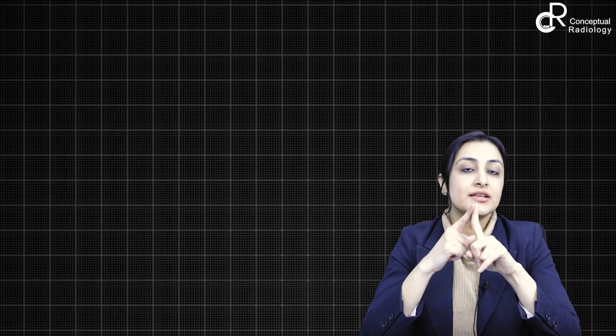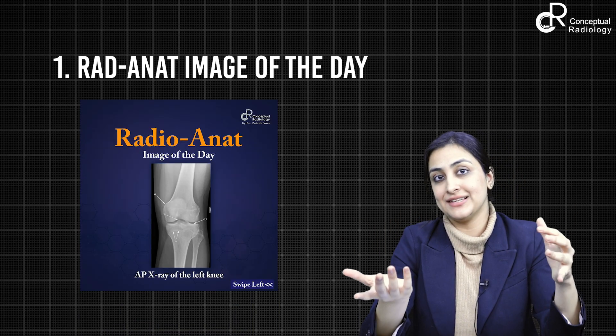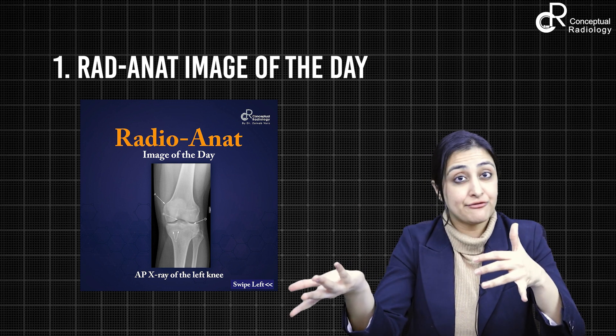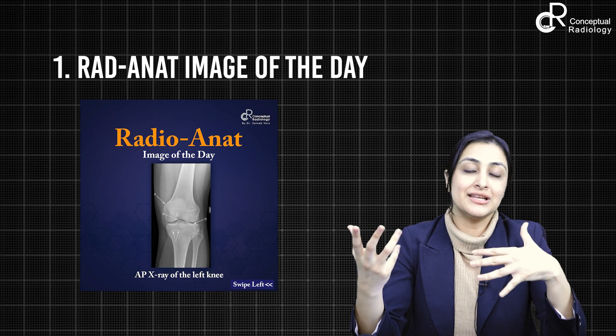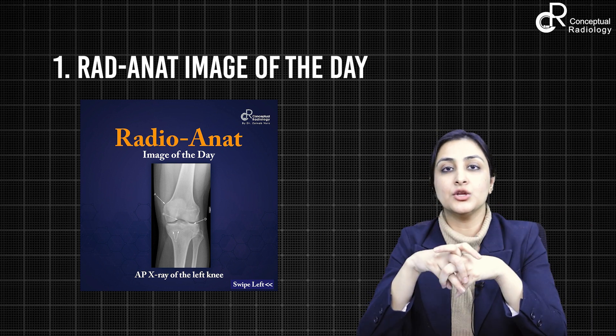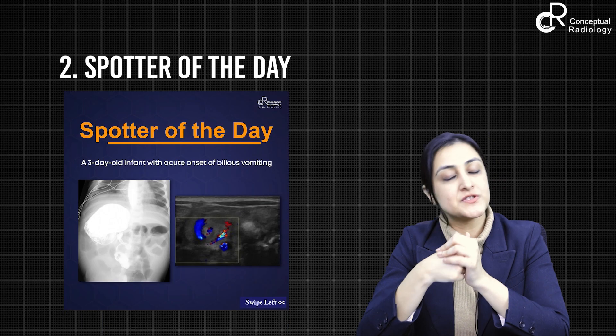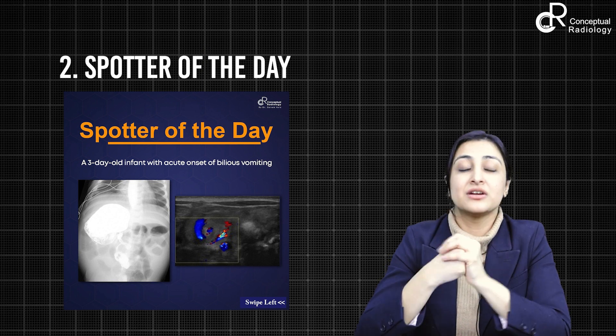Make sure that daily you are doing two things. One is the rad anat image of the day — daily we are uploading one labeled radiology image that teaches you the anatomy. This is very useful for students appearing for FRCR, and in general, if you don't know the anatomy, how do you expect to find the pathology? Radio anatomy is crucial, and daily one image is uploaded for you to practice. Daily we are also uploading one spotter, so you build your armamentarium of spotters. The older ones are available under the pearls section of our app.